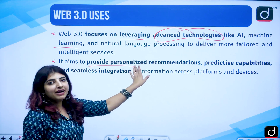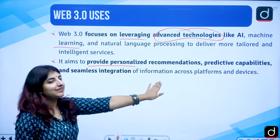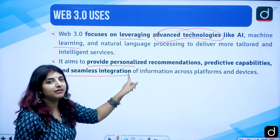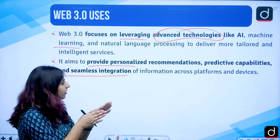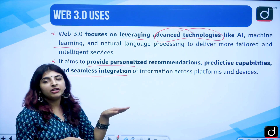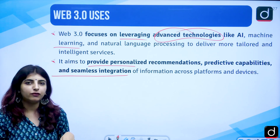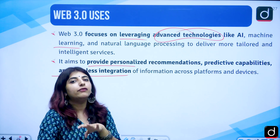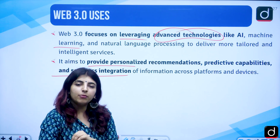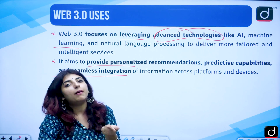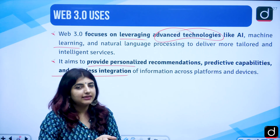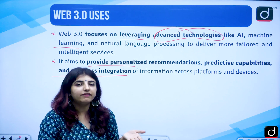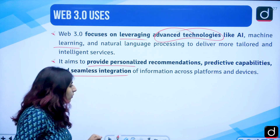The uses of Web 3.0 focus on leveraging advanced technologies like AI, machine learning, and natural language processing to provide personalized recommendations, predictive capabilities, and seamless integration of information across platforms. For example, if you viewed something on your browser, those items will appear as ads on Instagram, Facebook, and other websites.